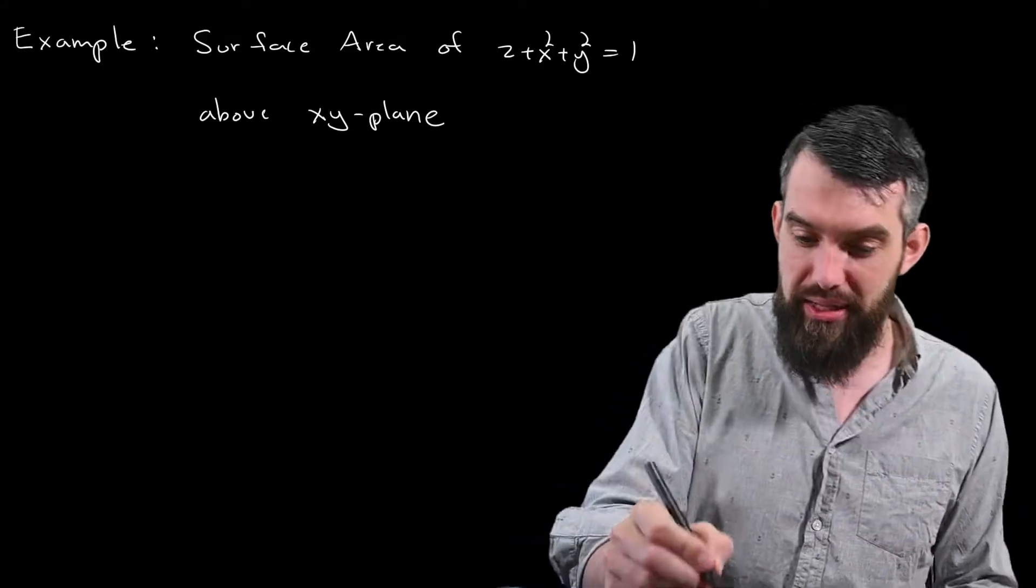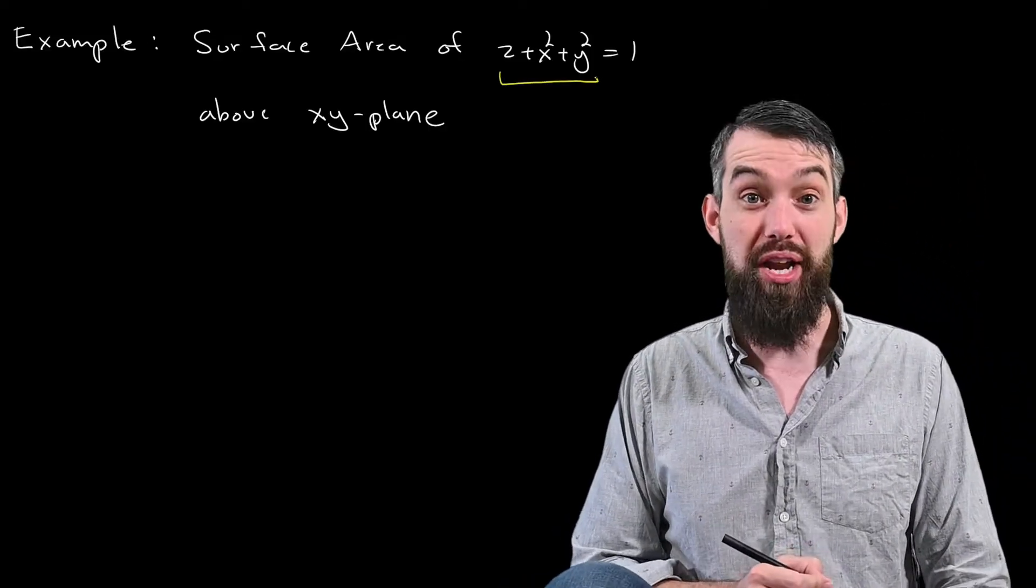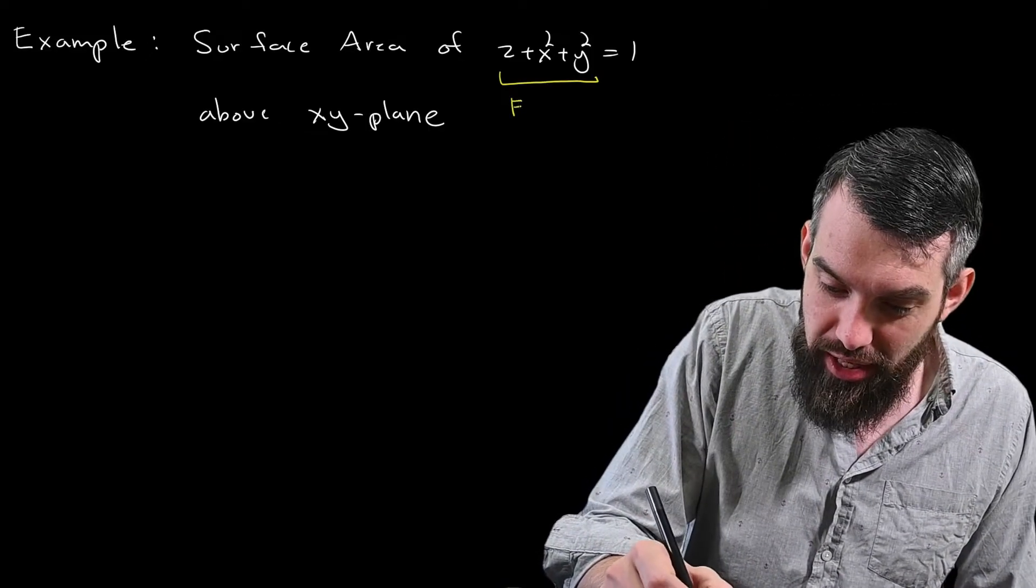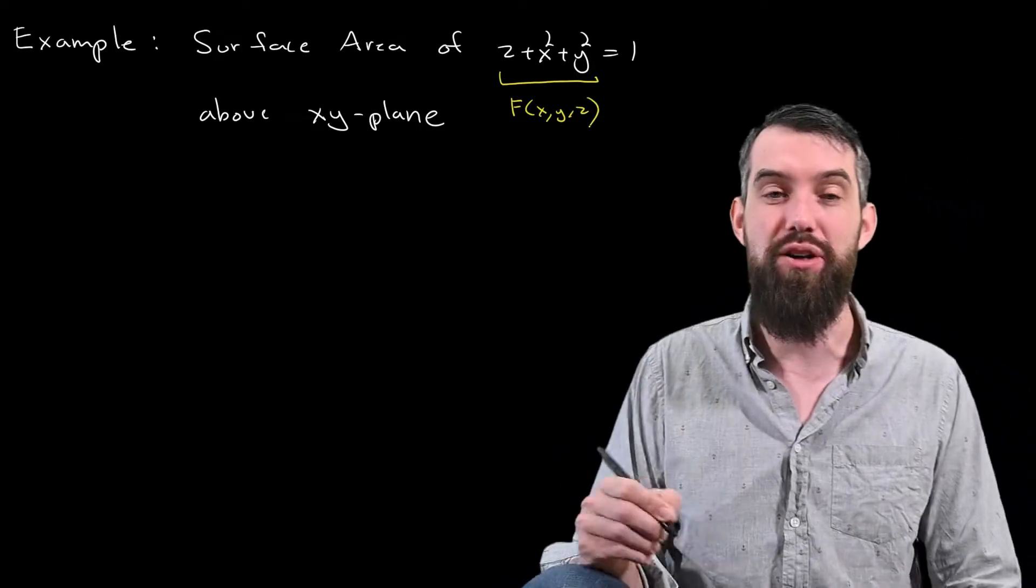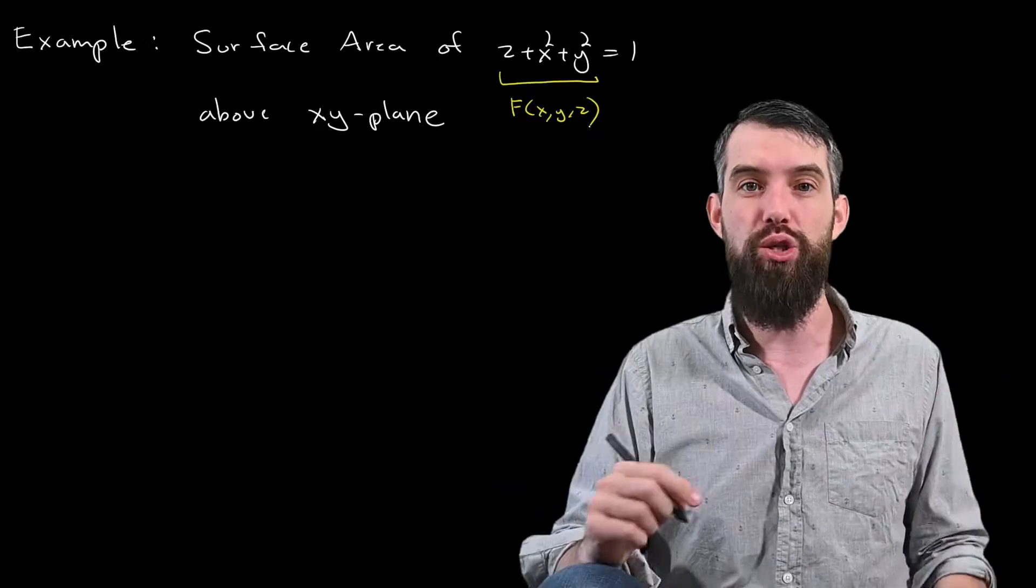The first thing I want to note is that what I have is an implicit description of my surface. This function could be thought of as a function of x, y, and z, and it's the function z plus x squared plus y squared, and it's equal to some constant, in this case, 1.